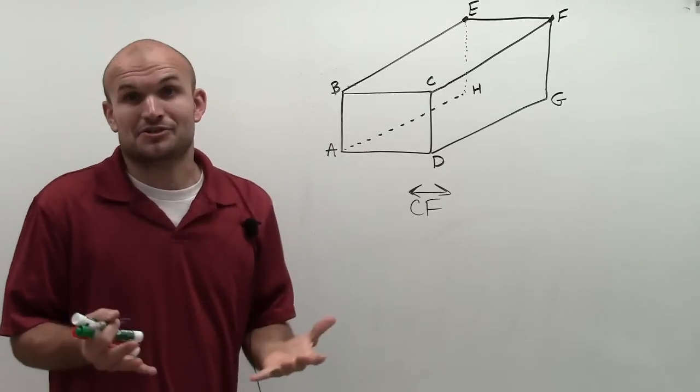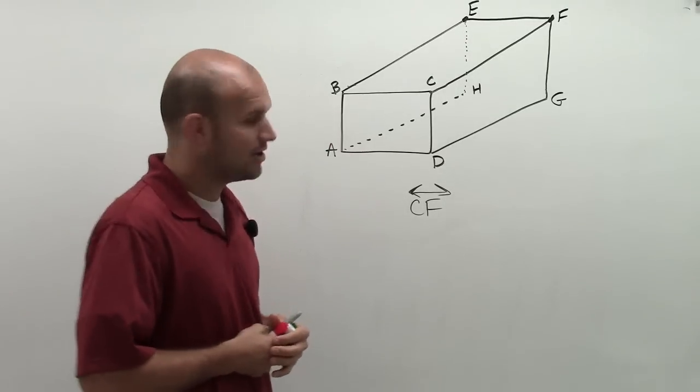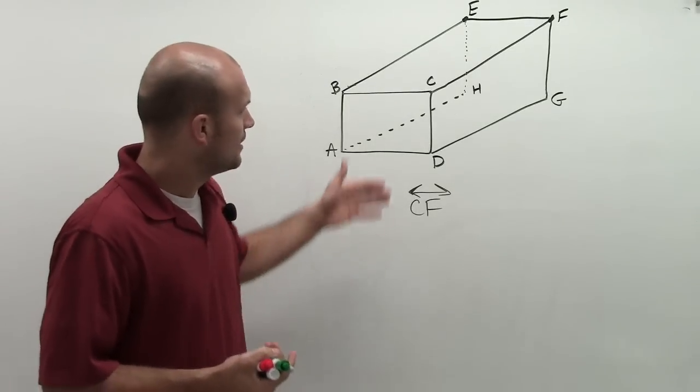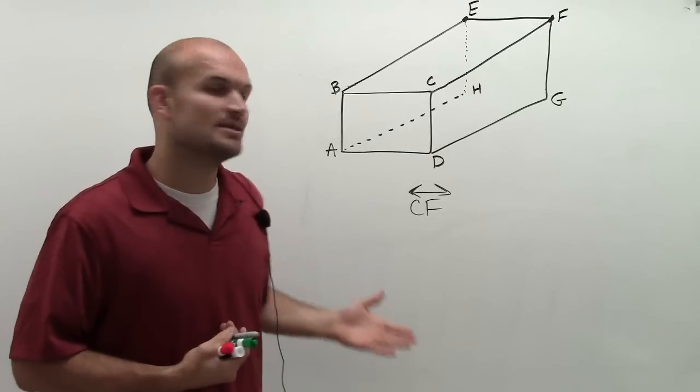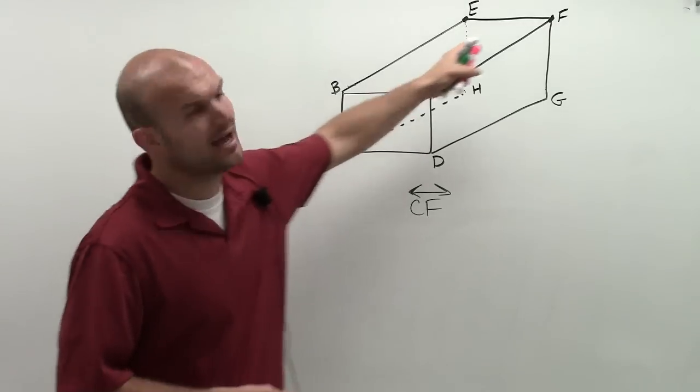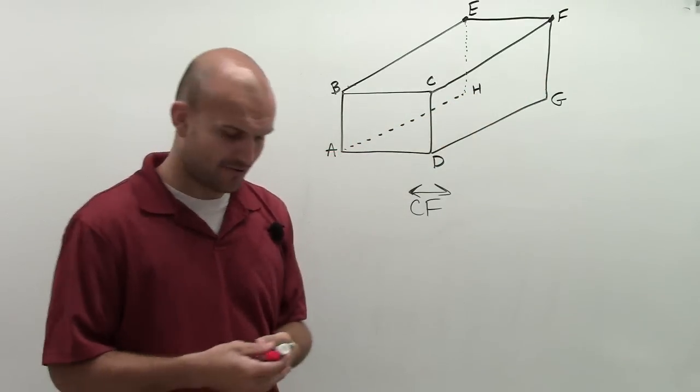And also, we're dealing with some lengths here as well. But the question we're asking is what would be the two planes that contain the line CF? To understand, if I'm looking, I'm saying, well, I don't have a line CF. I have a segment CF, right?